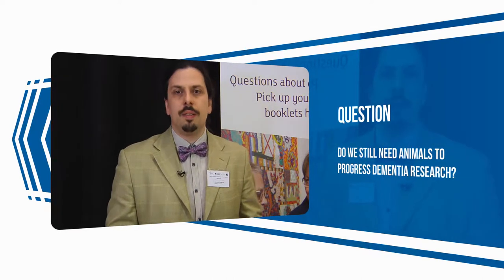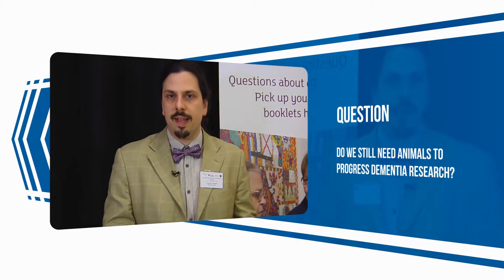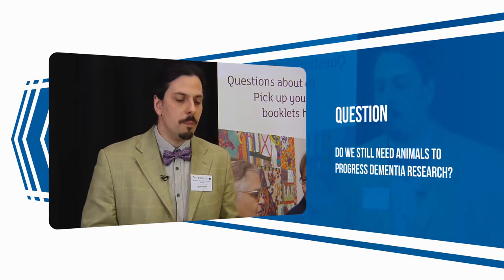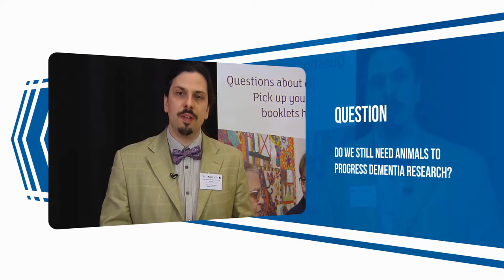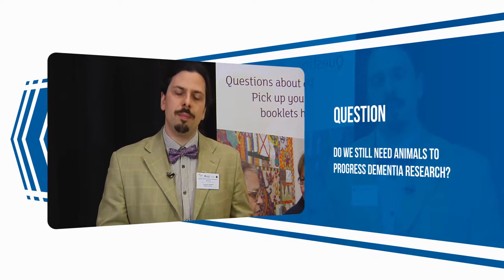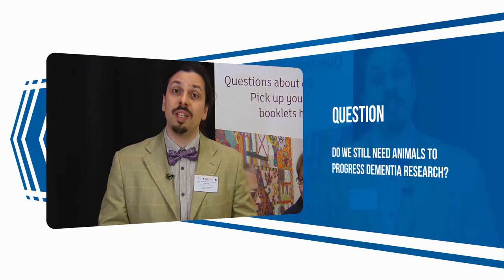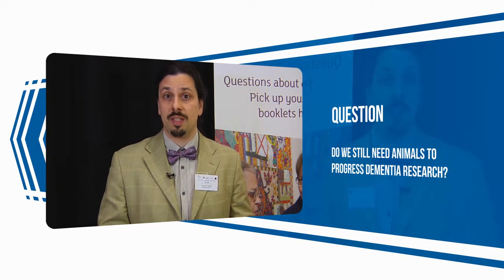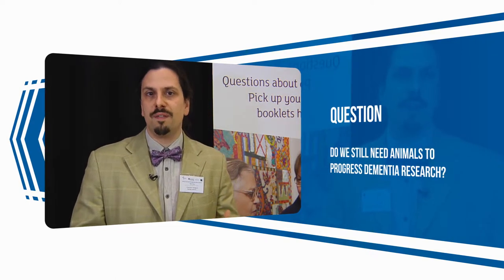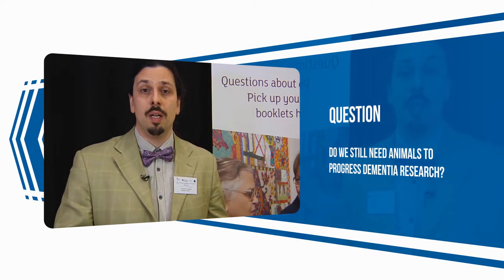Animal models are a need in Alzheimer's disease because, thanks to animal models, we can test hypotheses that could not be tested on a human being. There are different kinds of animal models. Some of them express genes involved in familial forms of Alzheimer's disease, and they overexpress peptides that are found in the brain of people with Alzheimer's disease, such as amyloid beta peptides.